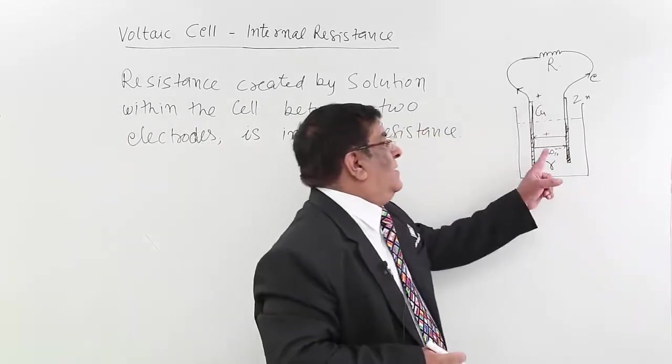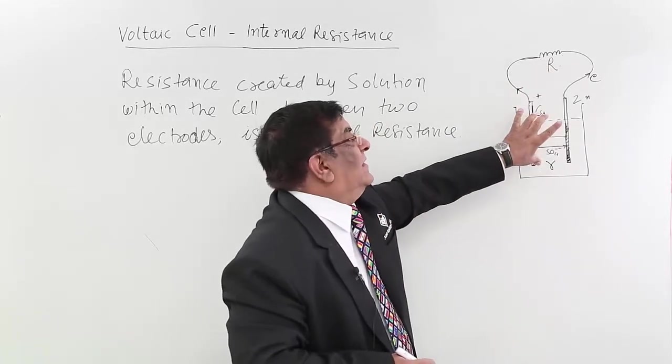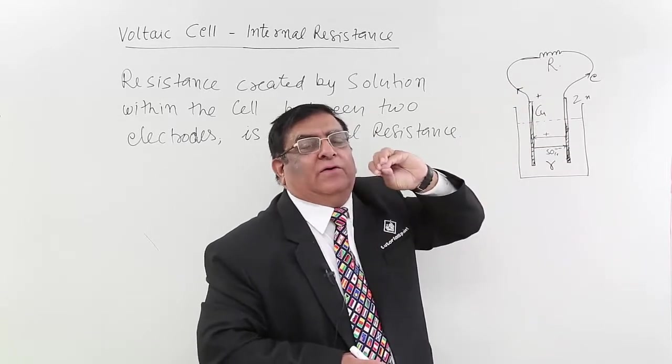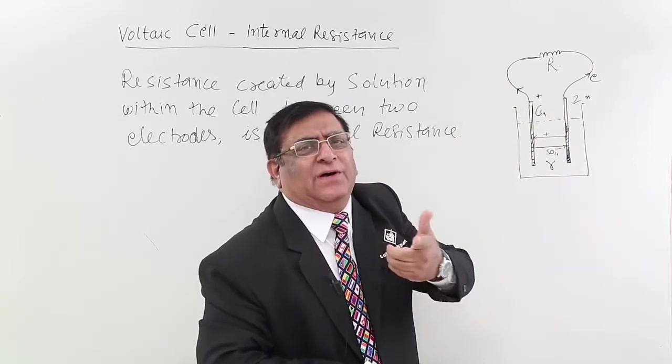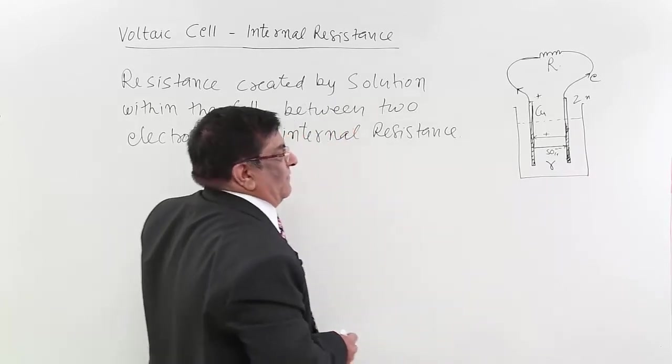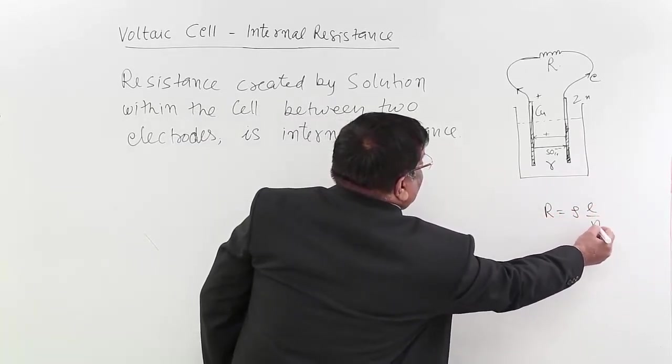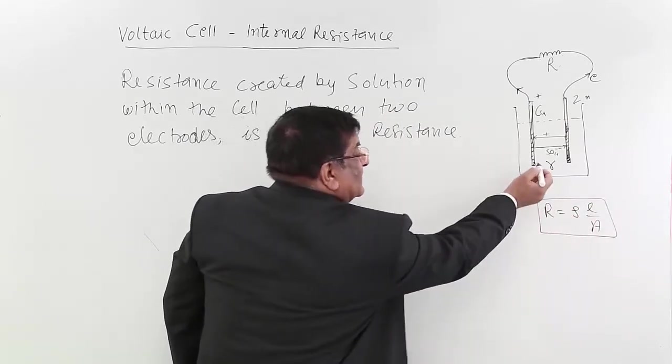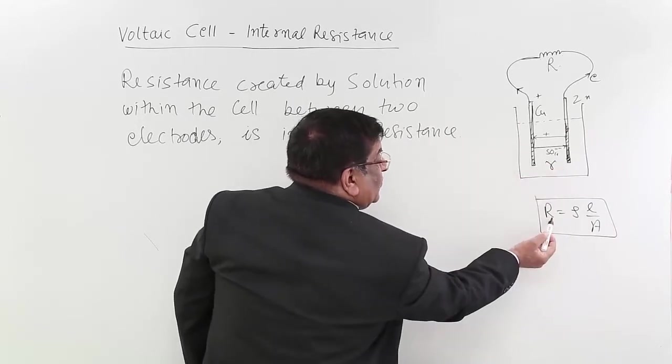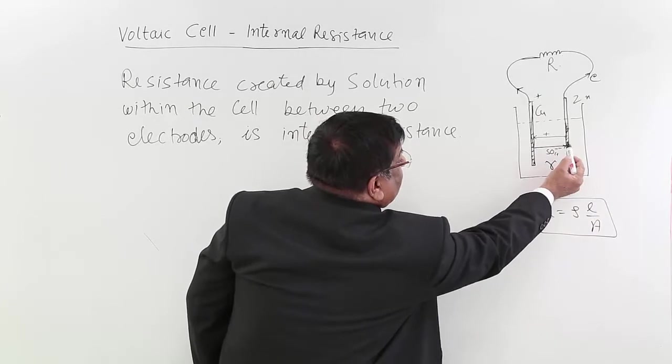Now outside we will use capital R. This internal resistance, on which quantity does it depend? A little knowledge and you know it very well - that R is equal to rho L upon A. This is resistance, any resistance. This is also a resistance. So it will increase with path of the length.